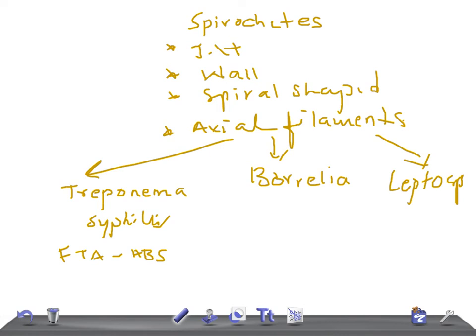Regarding Borrelia species: Borrelia burgdorferi causes Lyme disease, which is a very dangerous and potentially fatal disease — to be discussed in detail later. We also have Borrelia recurrentis, which causes relapsing fever. Remember that the vector for B. recurrentis is the body louse.